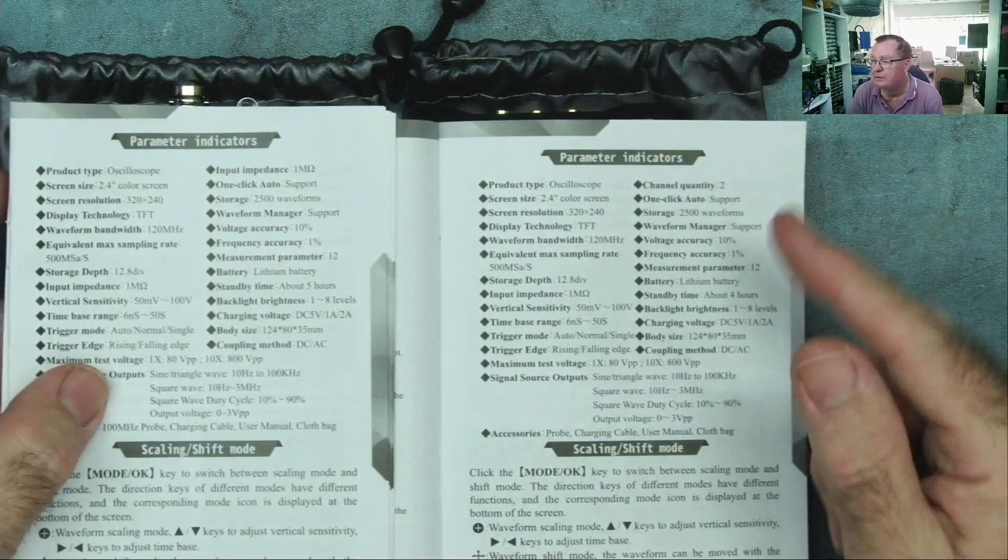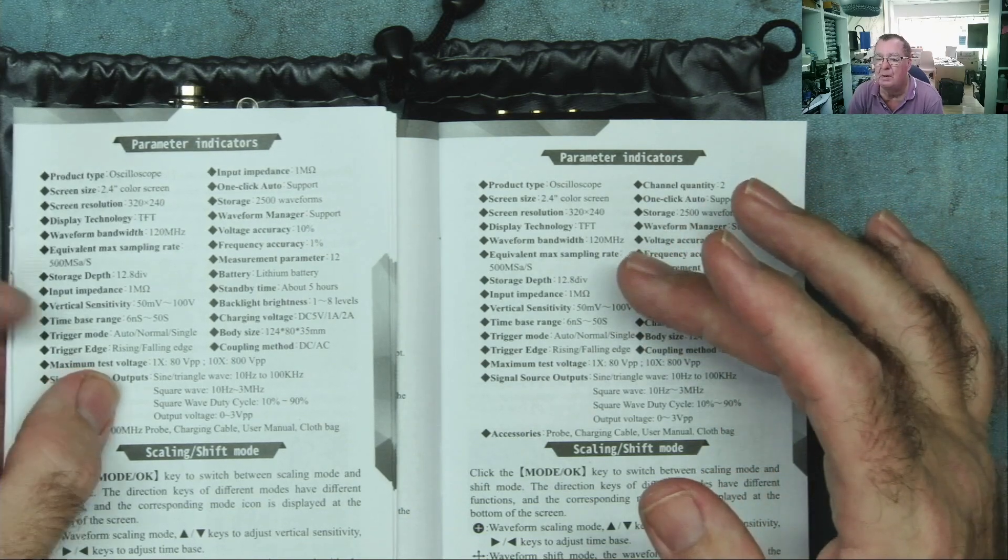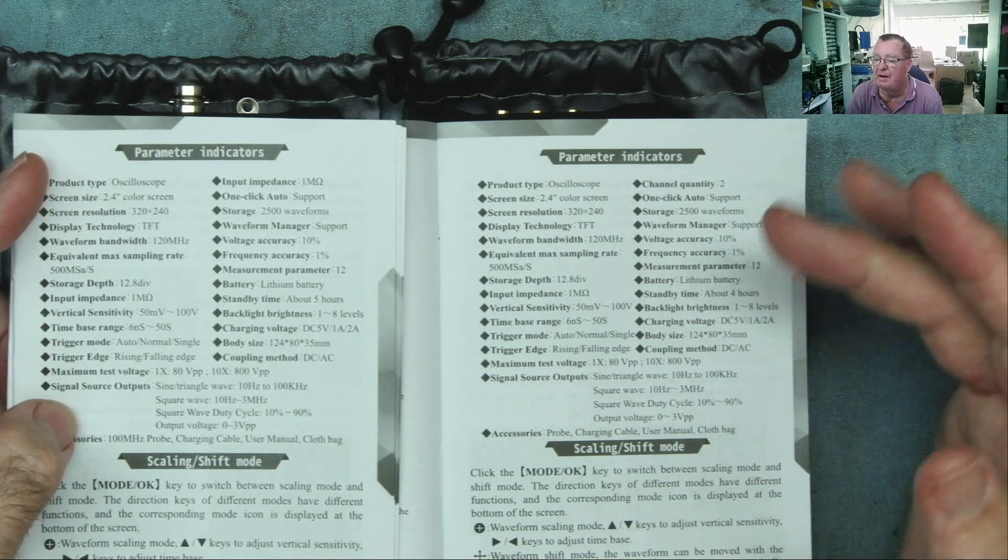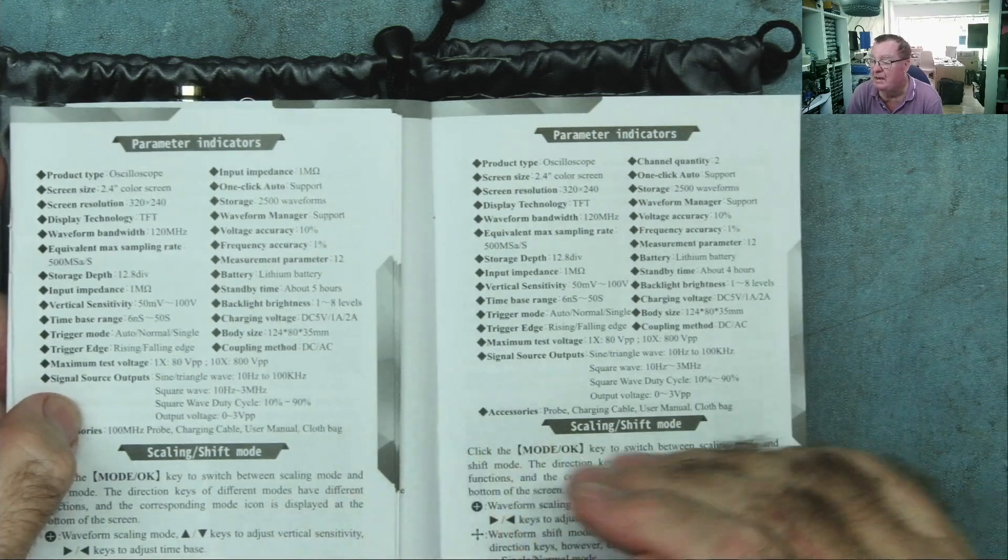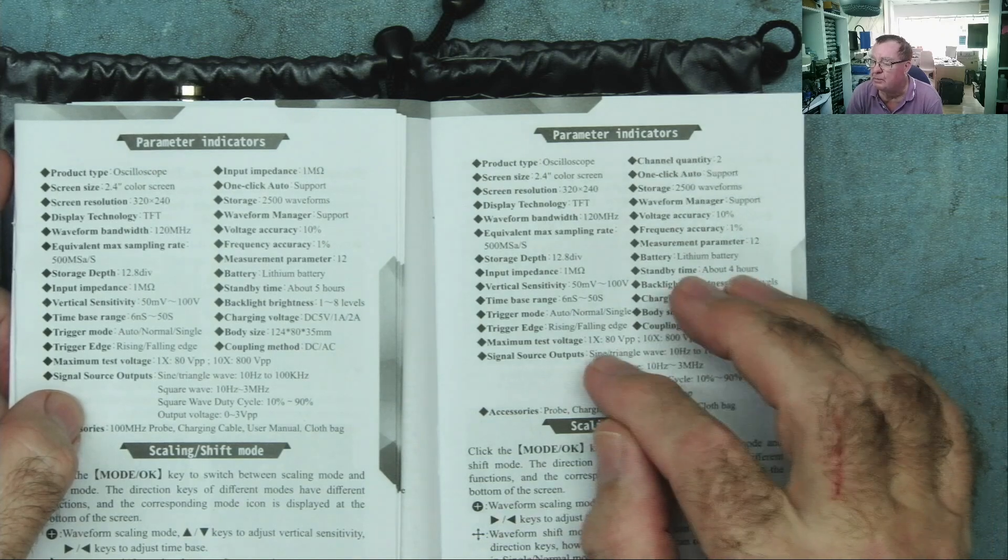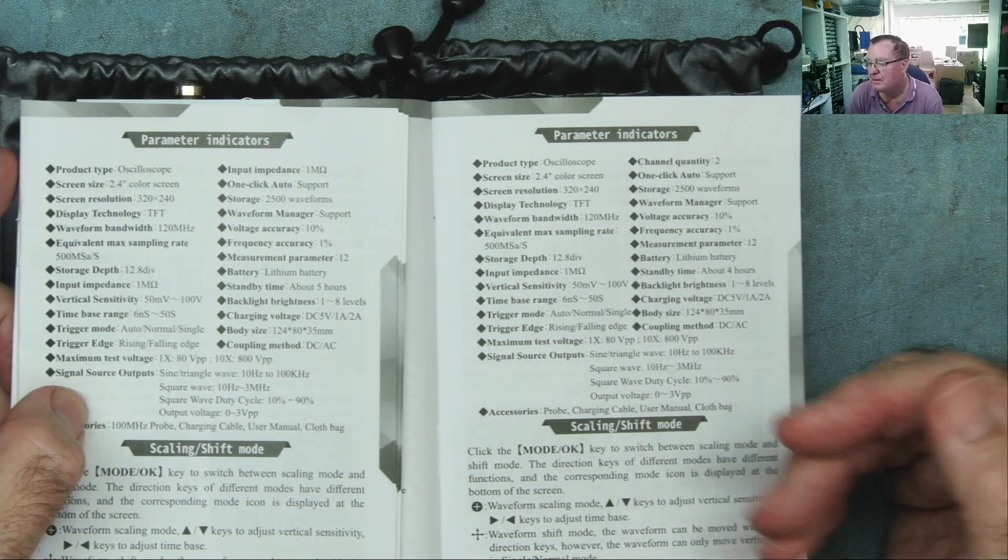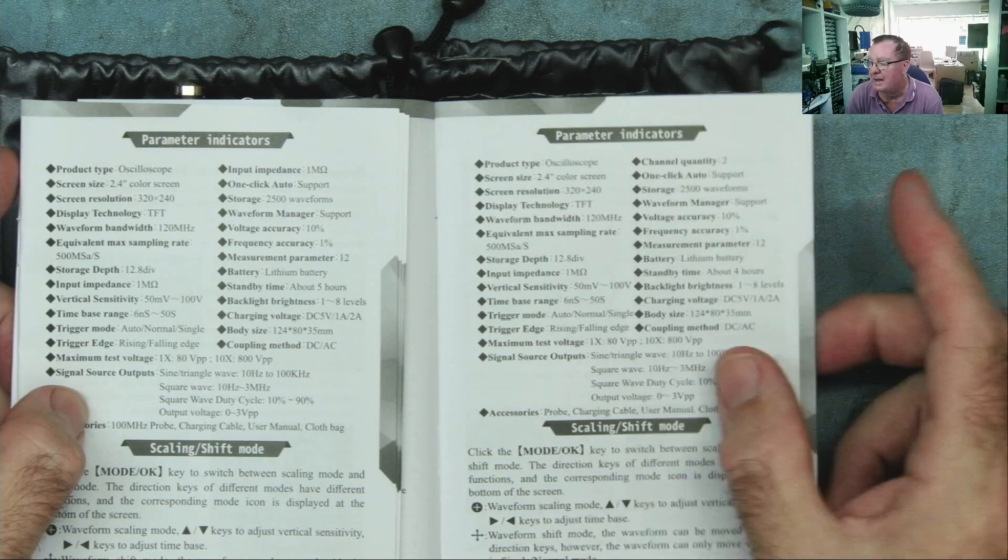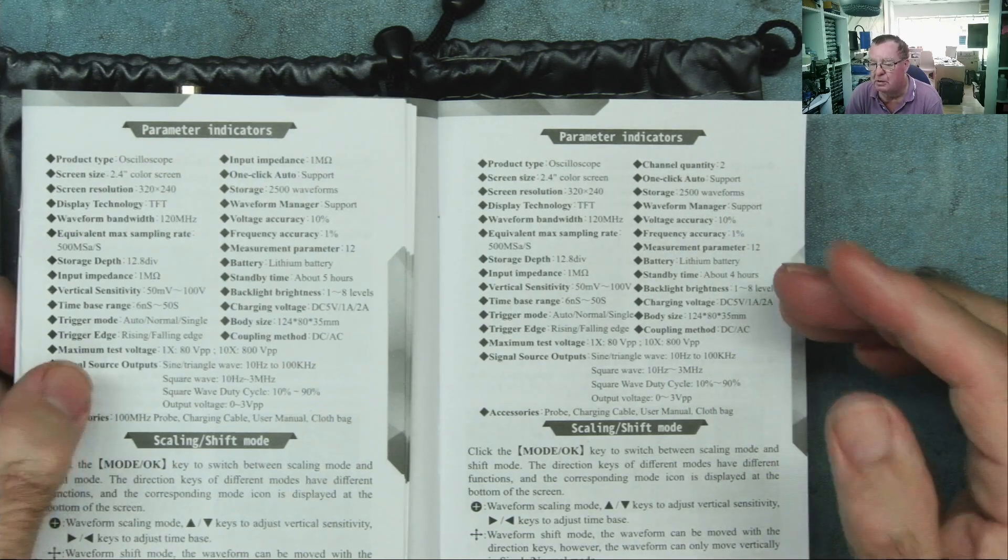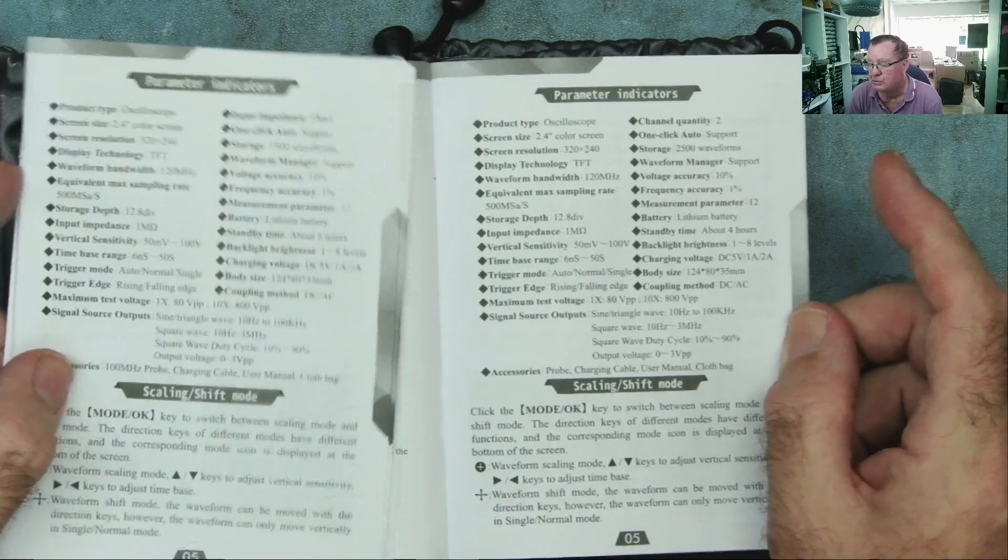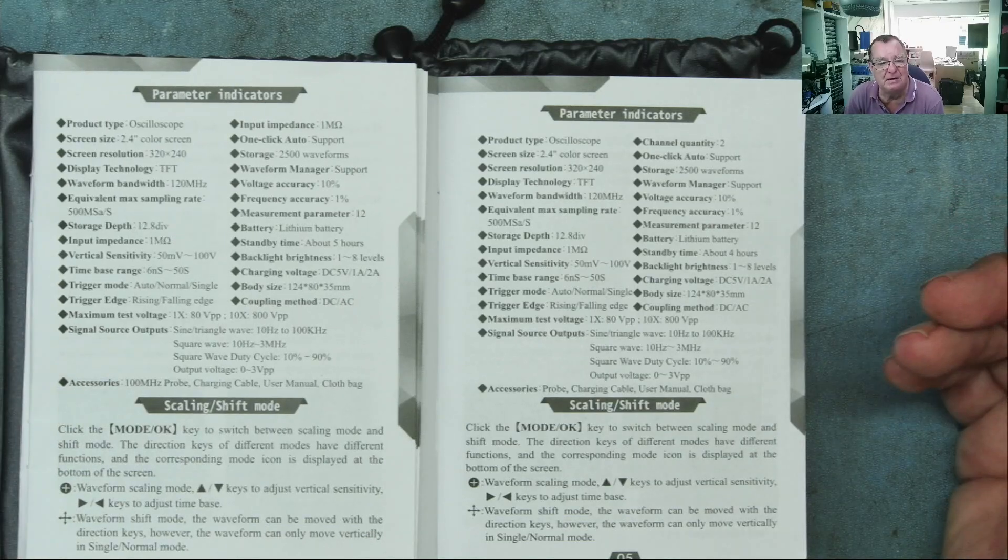If we look at the instruction manual, we will see they're basically the same. This is the new one with the dual channel, 120 megahertz, the same basically. I think these are really the same device, this just has two channels on it. Everything else looks to be the same. Note that this has a maximum 80 volt test voltage on the 1x probe, so if you're on high voltage stuff or you don't know the voltage, you need to set this to 10x first.